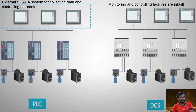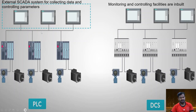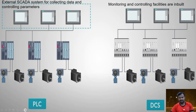A PLC system can achieve similar features to a DCS by using multiple PLCs that exchange data with each other and feed data to monitoring systems. The key difference is that PLC does not have a built-in monitoring system — a separate SCADA or HMI needs to be installed and integrated. In DCS, the controlling and monitoring software come as a single integrated package.